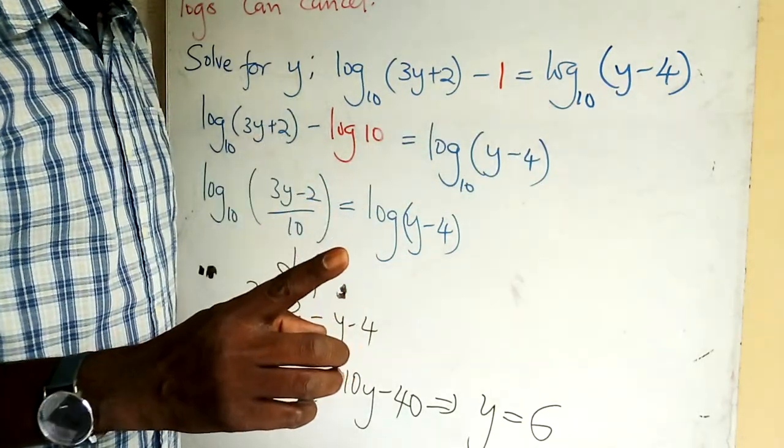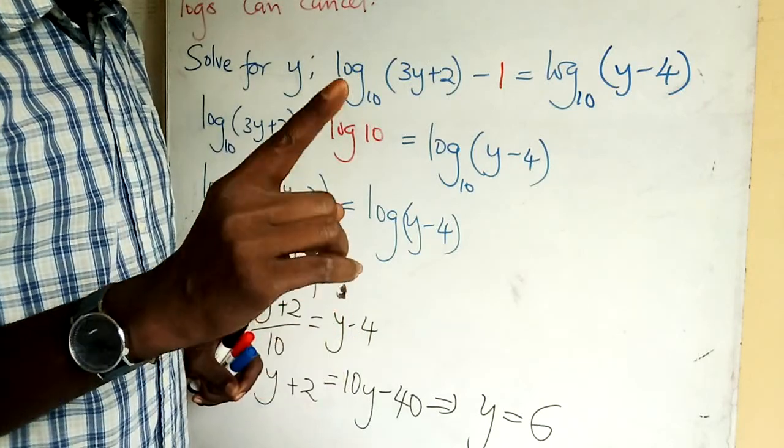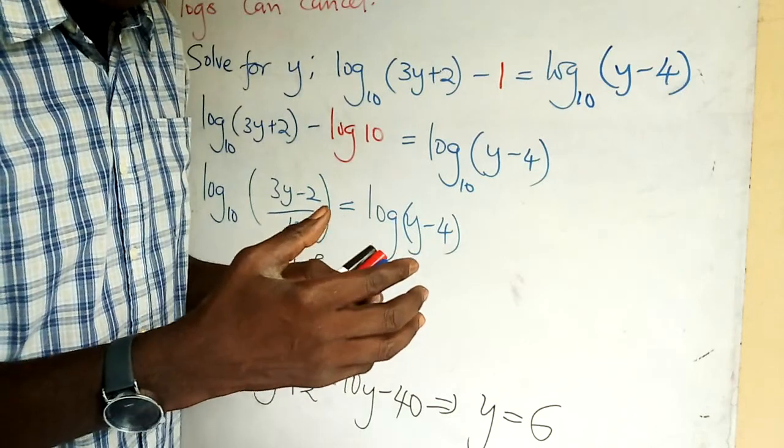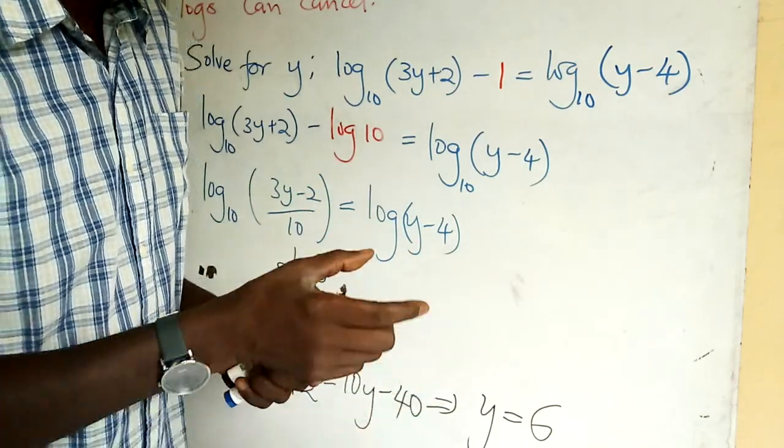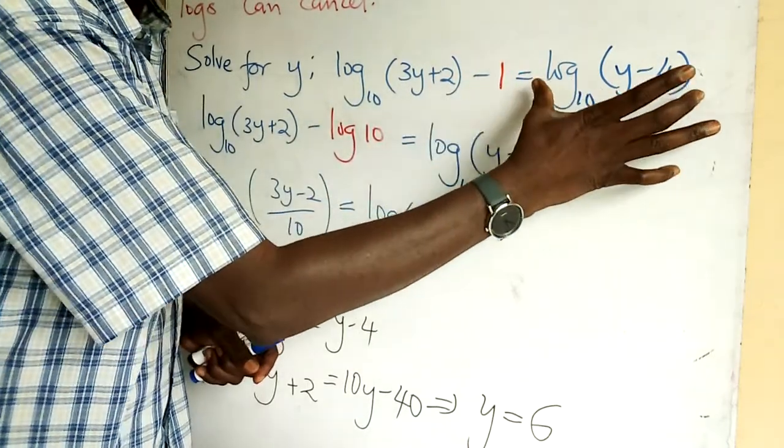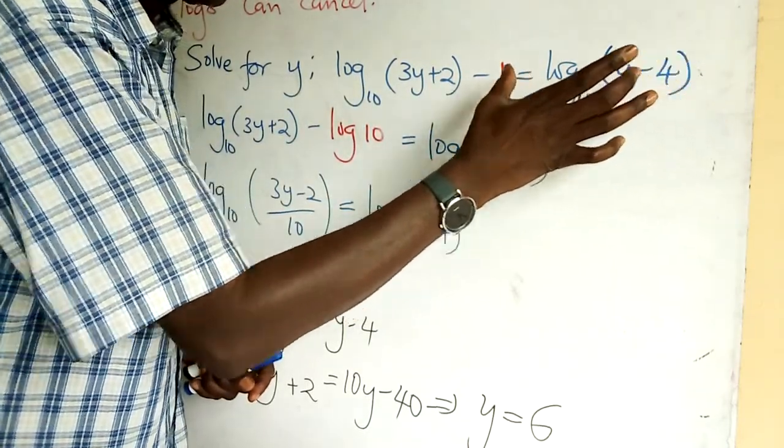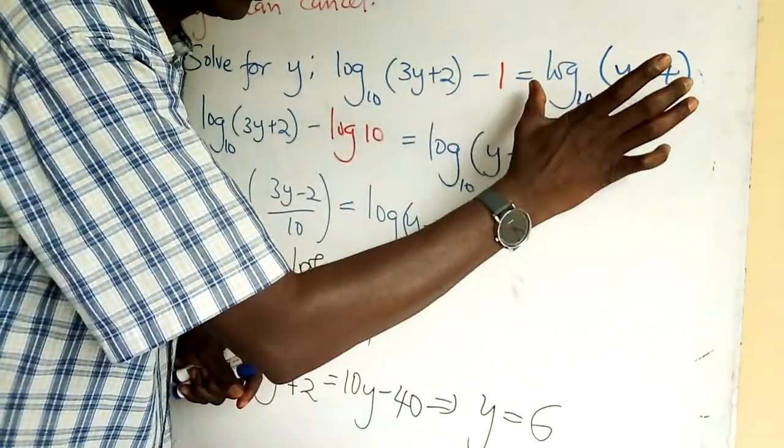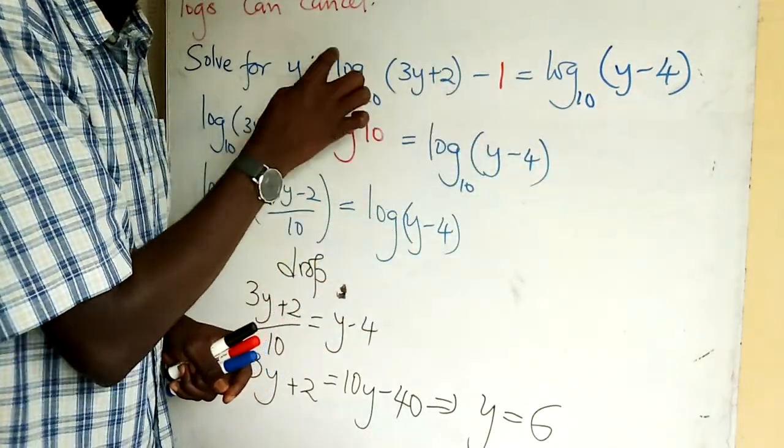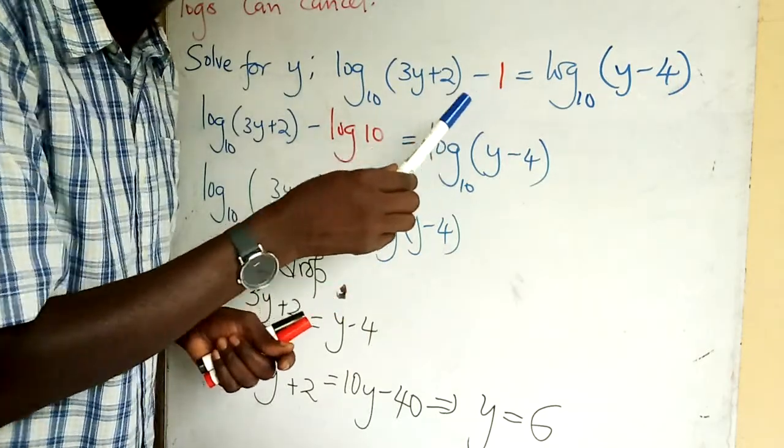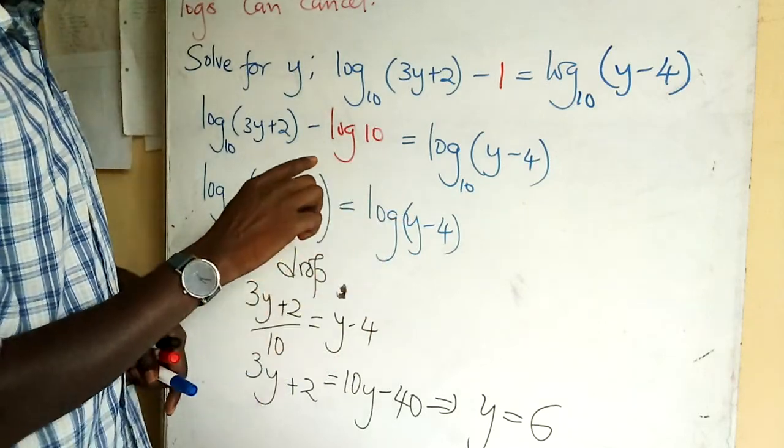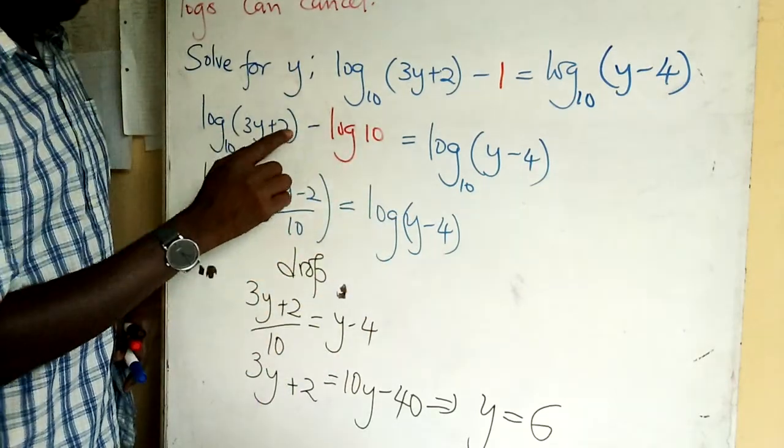Remember what I said when I noted: every term must be written in terms of log. So how many terms do you have? One, two, three. The first and the third are in terms of log, but the second one, no. That is what I meant. So I come here and write: what is one?